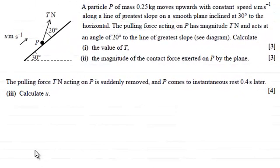Now in the next part of this question we're told that the pulling force of T Newtons acting on P is suddenly removed and P comes to instantaneous rest 0.4 seconds later. And what we've got to do now is calculate U.